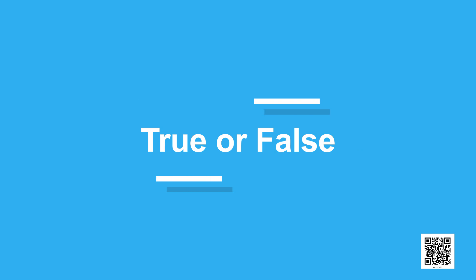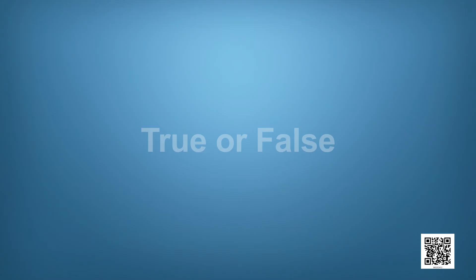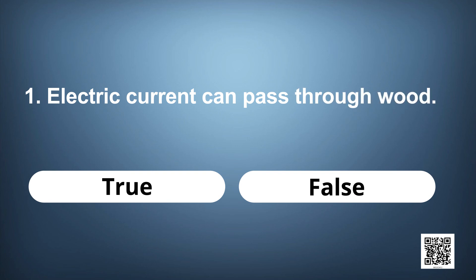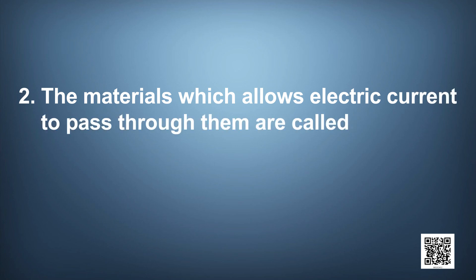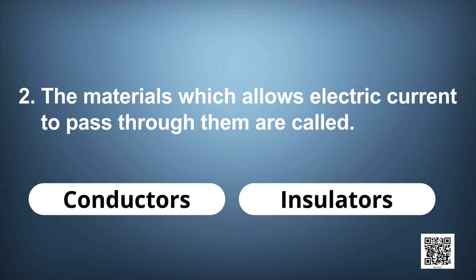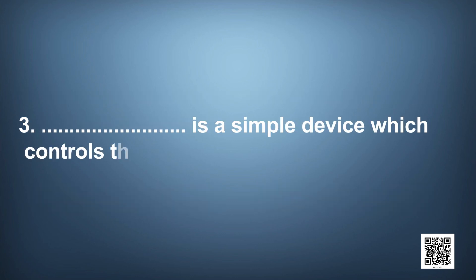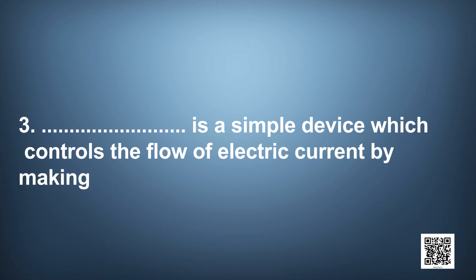Now I am going to ask you a few questions. True or false: electric current can pass through wood. This statement is false. Next question: the materials which allow electric current to pass through them are called — conductors or insulators? The right answer is conductors. Next: a dash is a simple device which controls the flow of electric current by making or breaking the circuit. The right answer is switch.